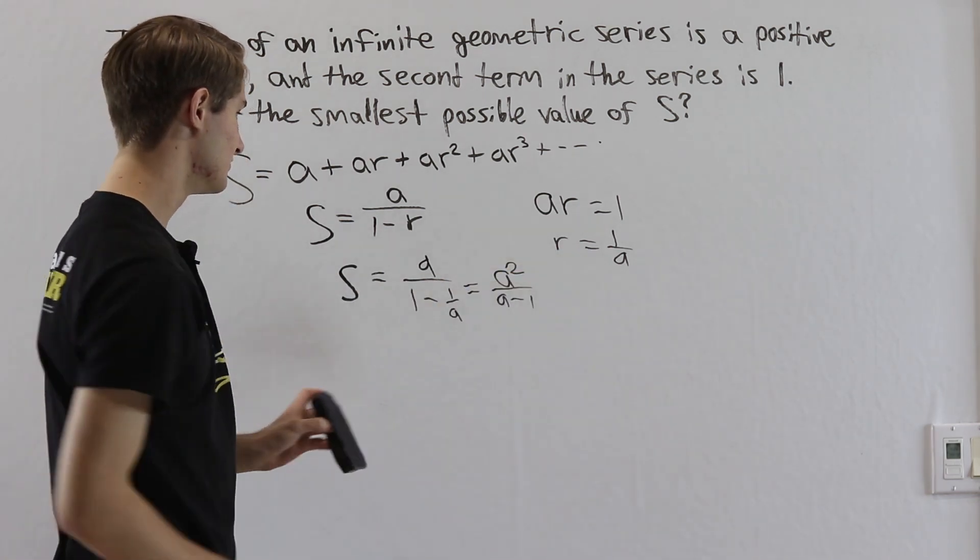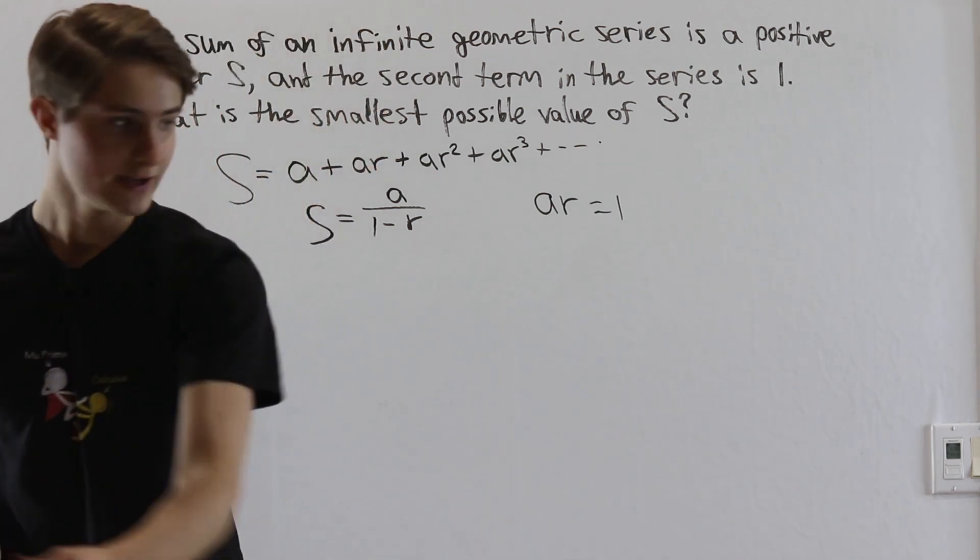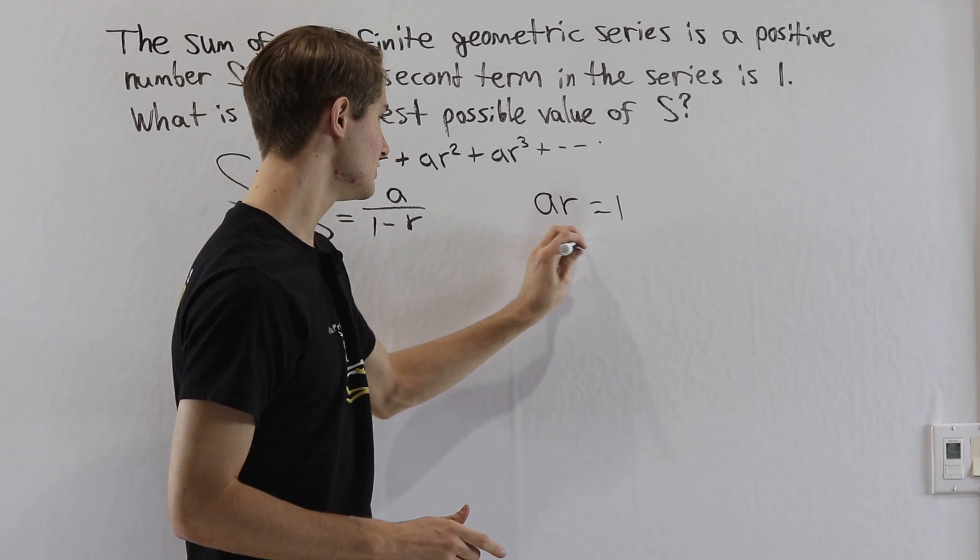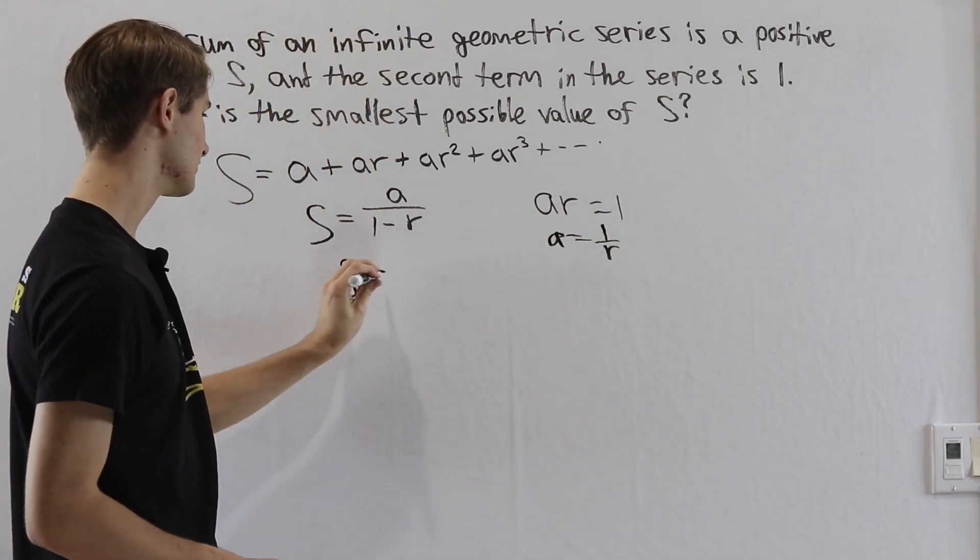Instead of solving for r in terms of a, let's try solving for a in terms of r. If we do that, we get that a is equal to 1 over r. And if we plug this in, we get a different result.